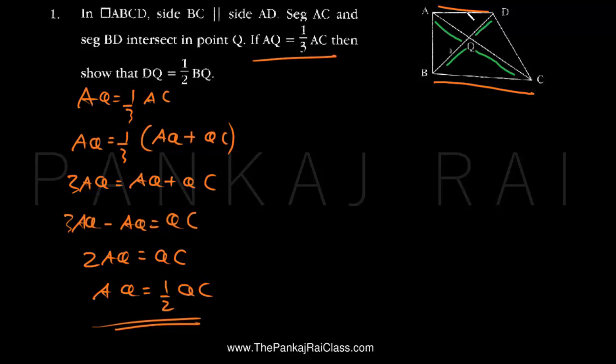When we have parallel sides, we can see that AD and BC are parallel. If we take transversal BD, then angle ADB and angle CBD will be the same.